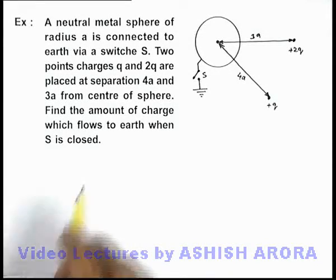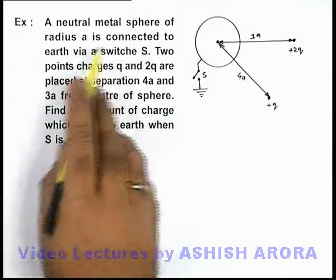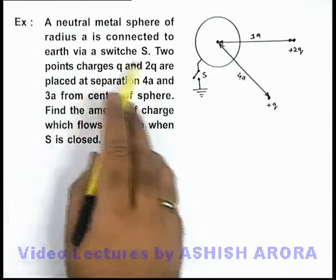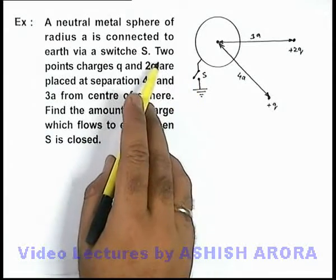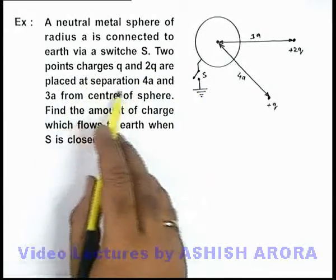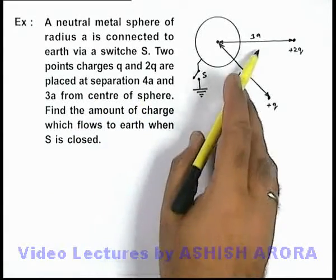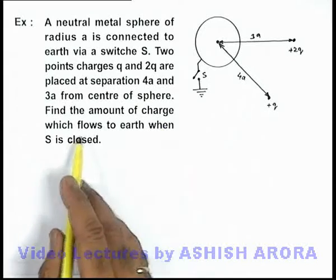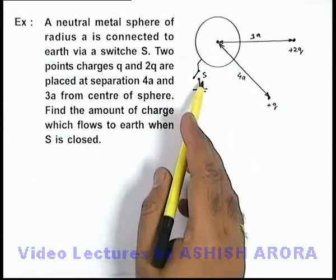In this example we are given that a neutral metal sphere of radius a is connected to earth via switch S. Two point charges q and 2q are placed at separation 4a and 3a from the center of this sphere, and we are required to find the amount of charge which flows through earth when the switch S is closed.